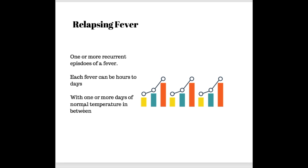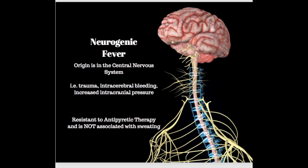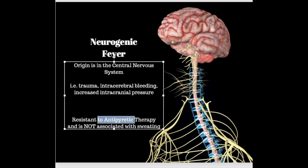For most fever types, we're going to see interventions such as Tylenol, ibuprofen, or aspirin — all designed to reset the thermostatic set point and bring it back down to normal. Now here's an interesting one: neurogenic fever. This occurs when there is damage or trauma to the central nervous system, including the brain and spinal cord. It may be seen with spinal cord injury, stroke with cerebral bleeding, or increased intracranial pressure from a bleed or other pathology. Importantly, neurogenic fevers are resistant to antipyretic therapy and are not associated with sweating.